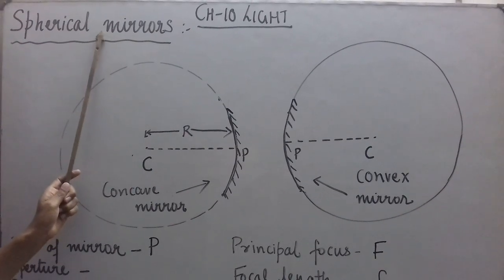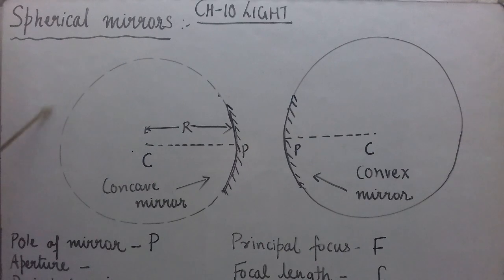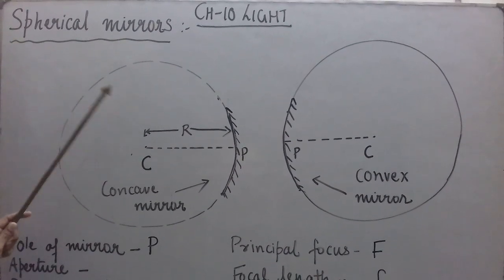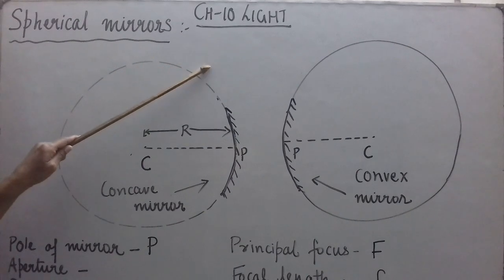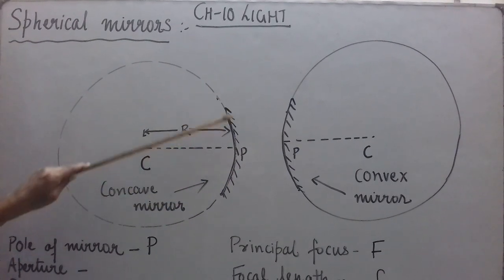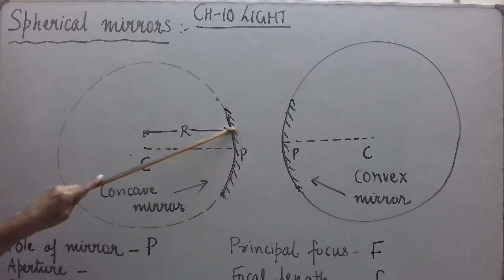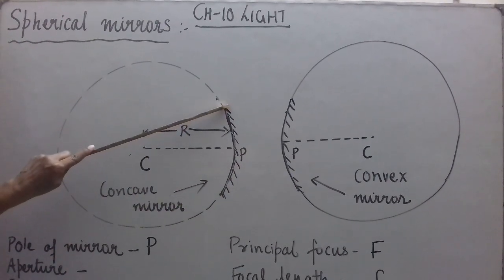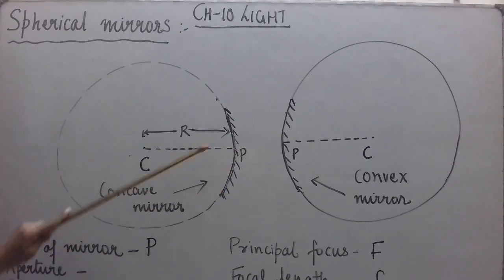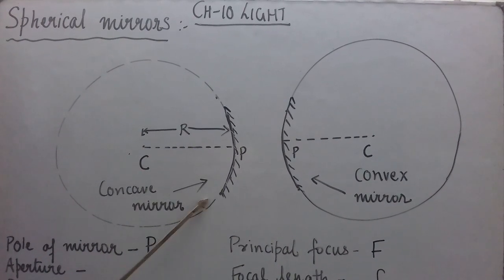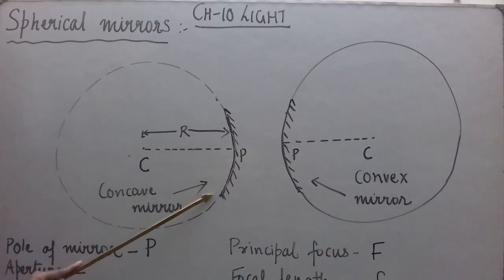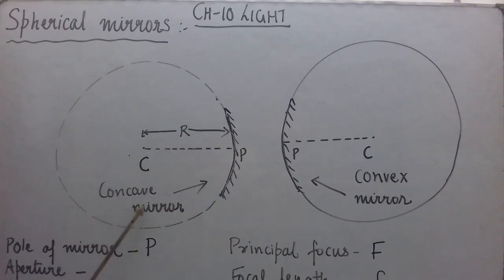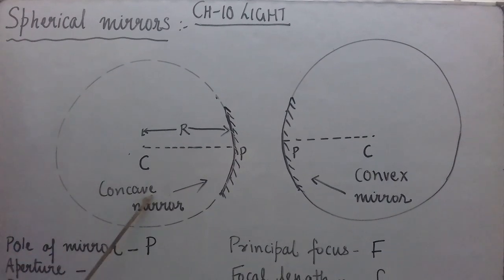Let us try to understand what are spherical mirrors. Consider a hollow glass sphere. If we take a small part of it, cut it, and polish it from the outer bulging side, then this part of the sphere which is polished from one side is now acting like a concave mirror — a mirror whose reflecting surface is curved inwards. To see the image, one has to stand in front of this side.